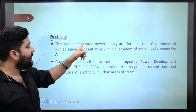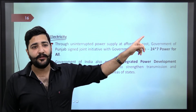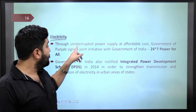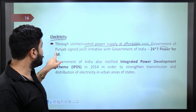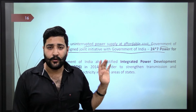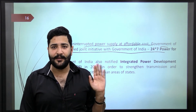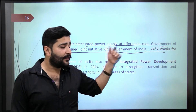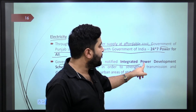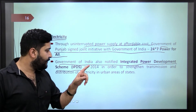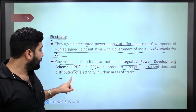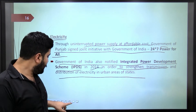Regarding electricity: Punjab produces more than its demand. For uninterrupted power supply at affordable cost, the Government of Punjab signed a joint initiative with the Government of India — '24x7 Power for All.' The Government of India also notified the Integrated Power Development Scheme in 2014 to strengthen transmission and distribution of electricity in urban areas.